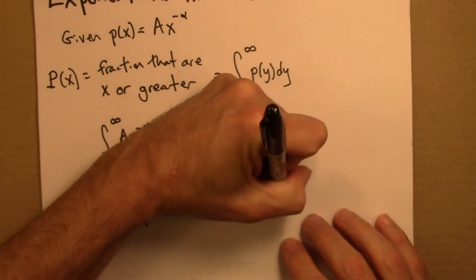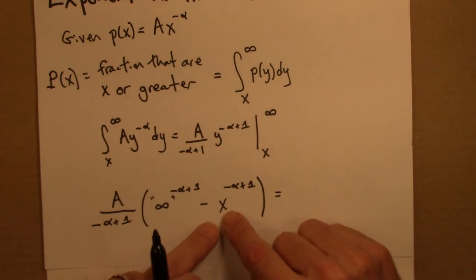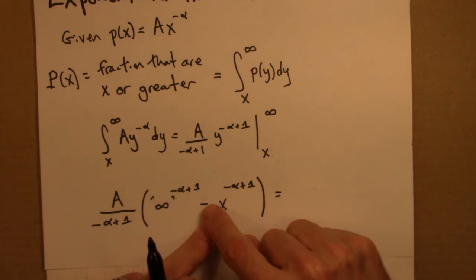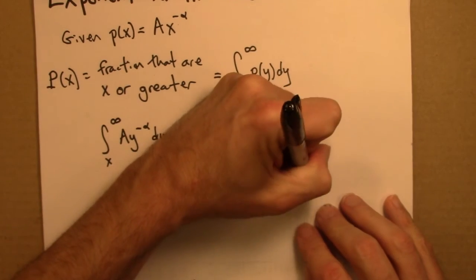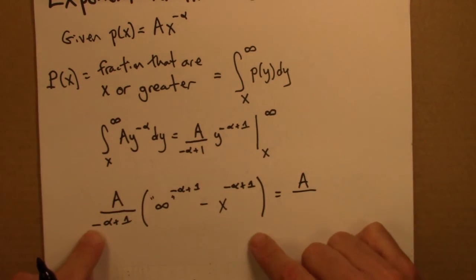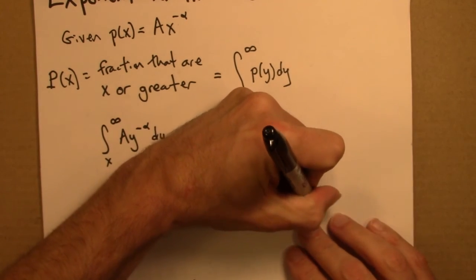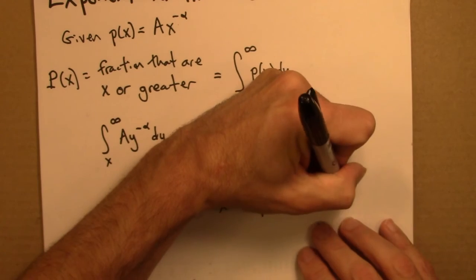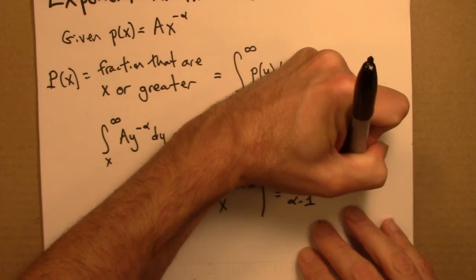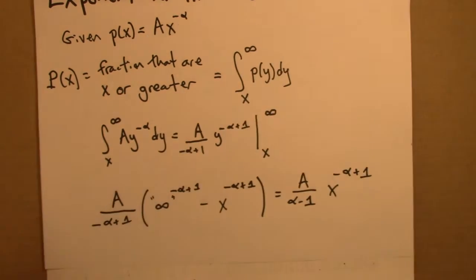And that leaves us with the following. So A over x minus alpha plus 1, this minus sign and the minus sign down here, I'm going to simplify. So that minus becomes plus, this plus becomes minus. And then this is x minus alpha plus 1.